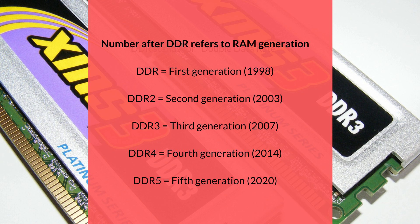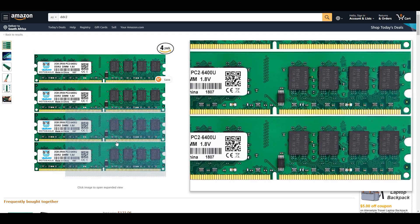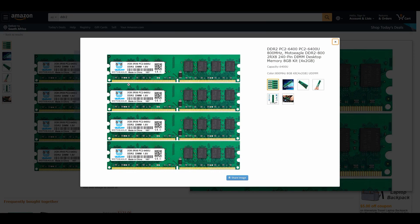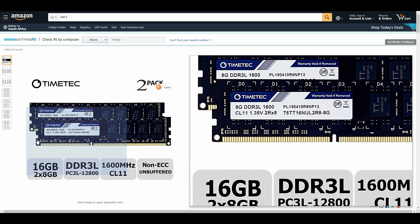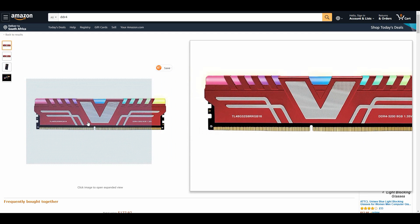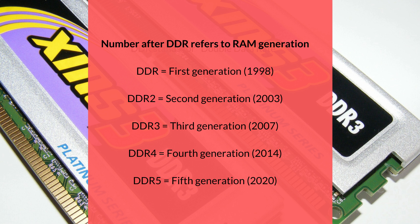RAM within a specific generation shares certain characteristics, such as its baseline performance and number of pins. The number following DDR tells you which generation your RAM belongs to. DDR2, from the second generation, is the oldest kind you're likely to come across today and is otherwise obsolete. DDR3 was released in 2007, and DDR4 hit the market in 2014 yet still hasn't taken complete control of the market. DDR5 is the newest RAM generation, but it won't become the main standard for new computers for a few more years.